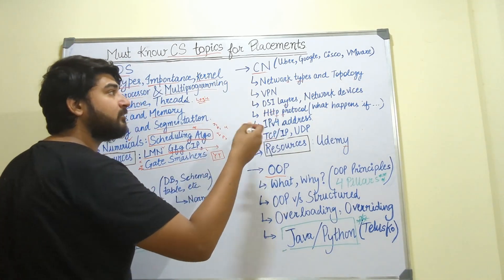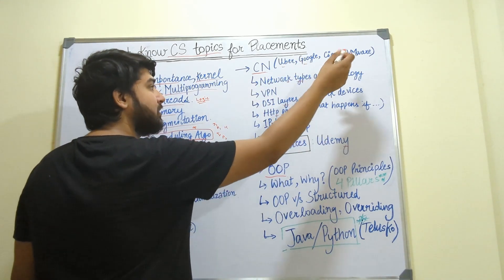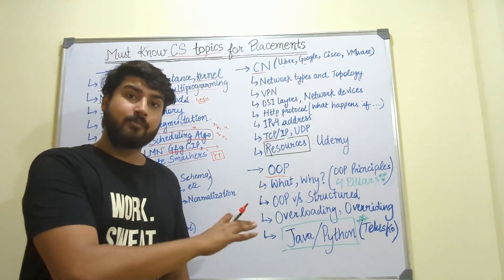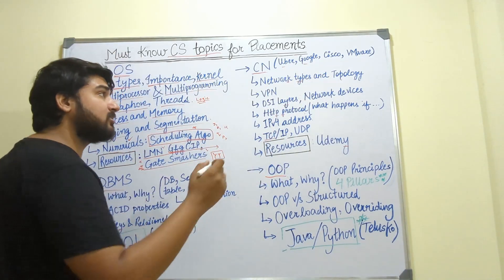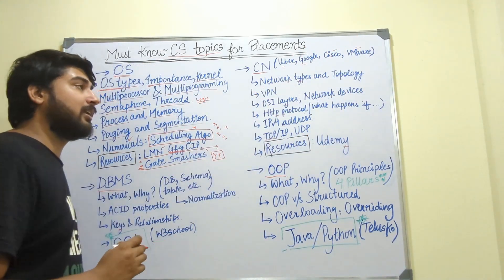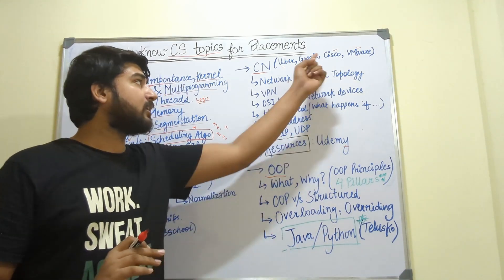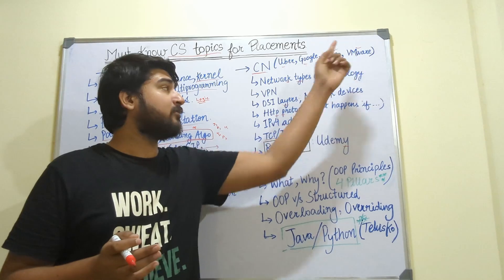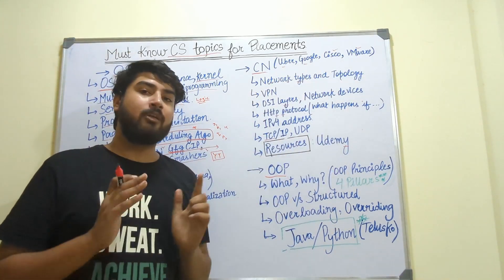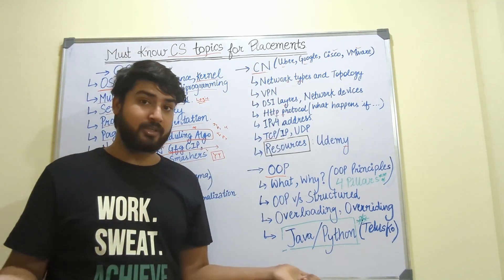If you go to interviews at companies like Uber, Google, Cisco, or VMware, you will surely get questions from computer network topics. Especially at Cisco and VMware — if you go for those interviews, 100% you will get asked networking questions. Cisco gives around 30 LPA and VMware gives around 20 LPA. Both are good companies, and if you want to crack their interviews, you need to be good in computer networks because they themselves are networking companies.